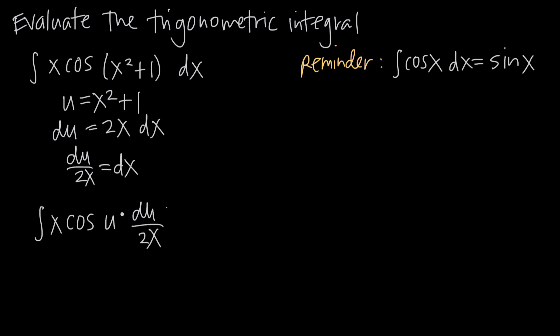Now we can see that we have an x here in the numerator and an x in the denominator. Those will cancel with one another. We can also take this 2 in the denominator, which basically represents 1 half, and we can pull that out in front of the integral. So we end up with 1 half times the integral of cosine of u du.